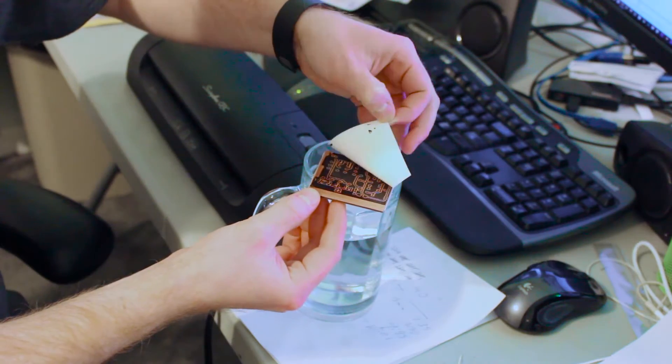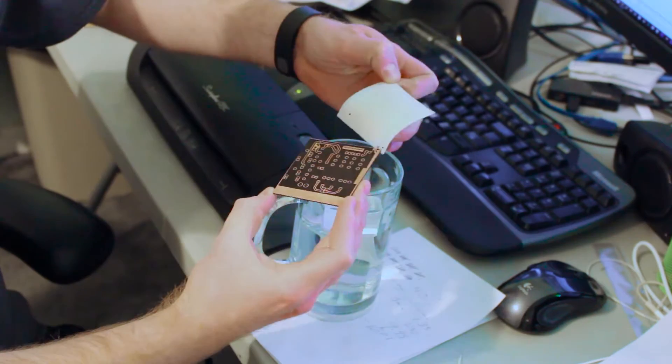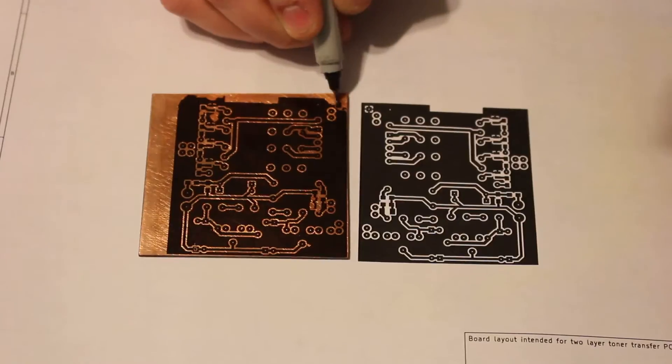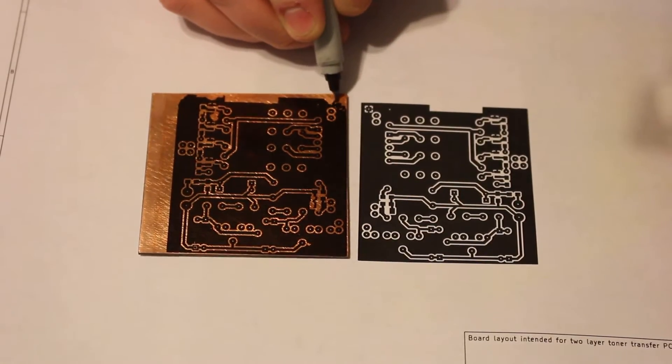After that, I drop it in water, let it soak for about 20 minutes, and peel off the paper. That's a good looking board, but it does have some defects, so I can clean those up using a Sharpie.